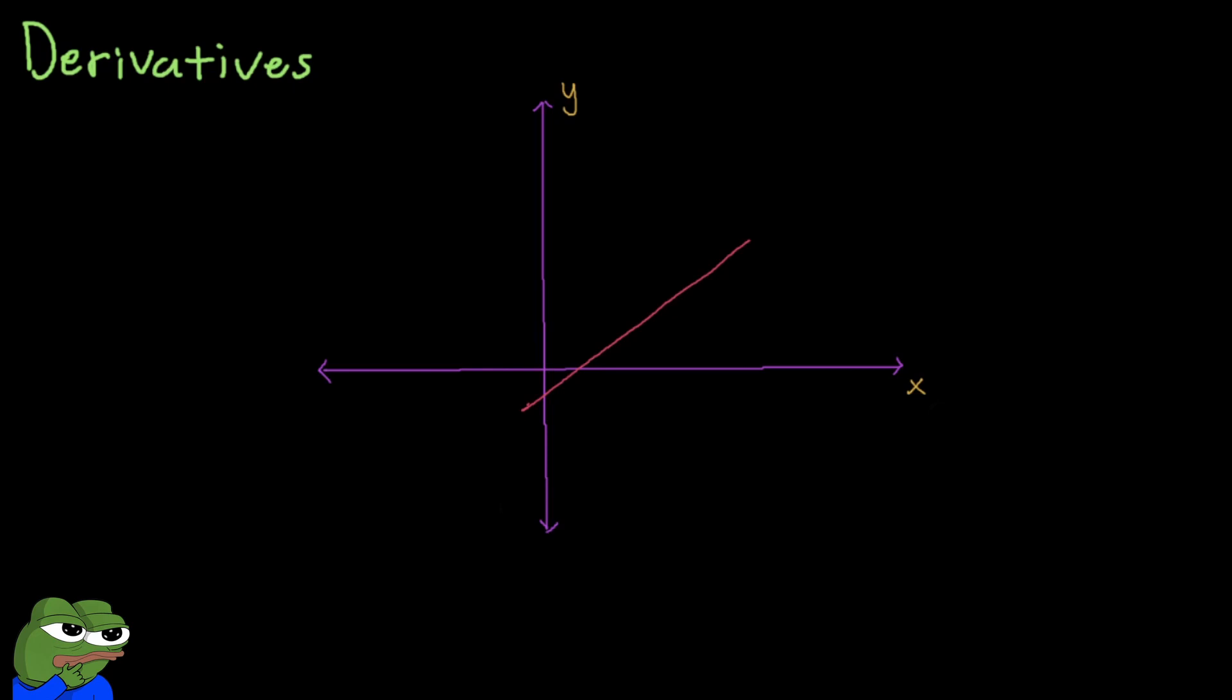What's shown on screen now is a simple linear function. We know that the slope of this graph is rise over run - how much the vertical variable changes with respect to how much the horizontal value changes.